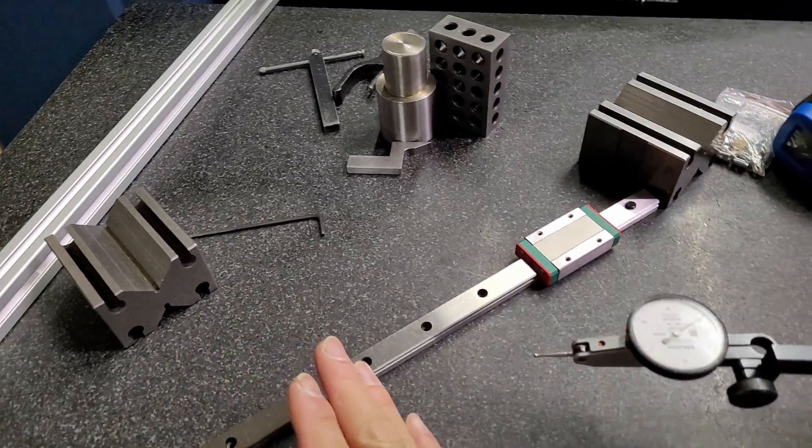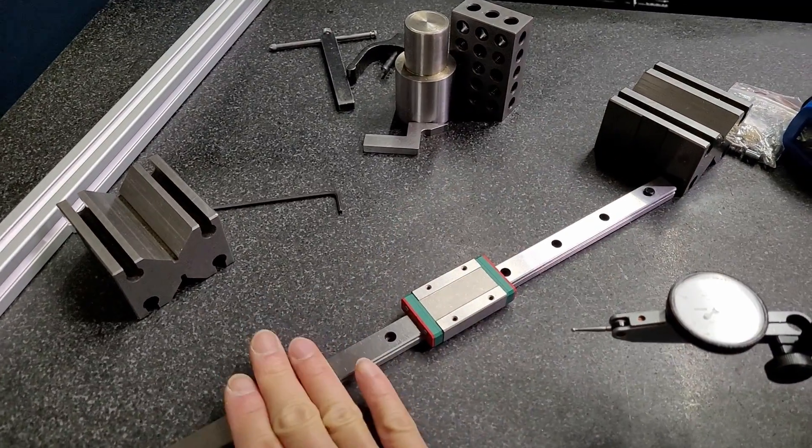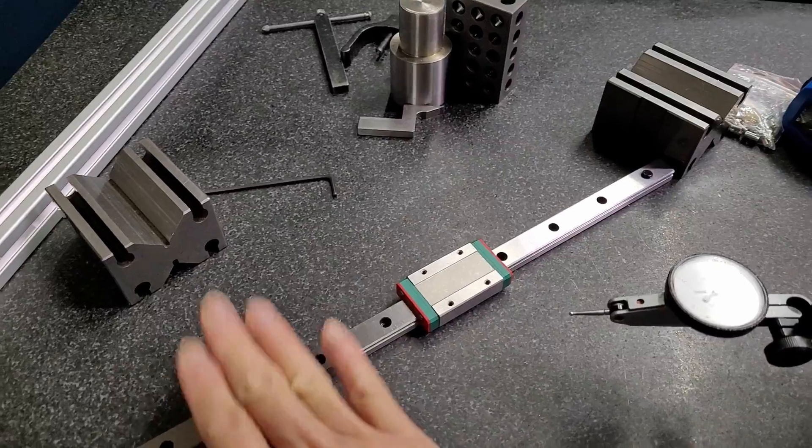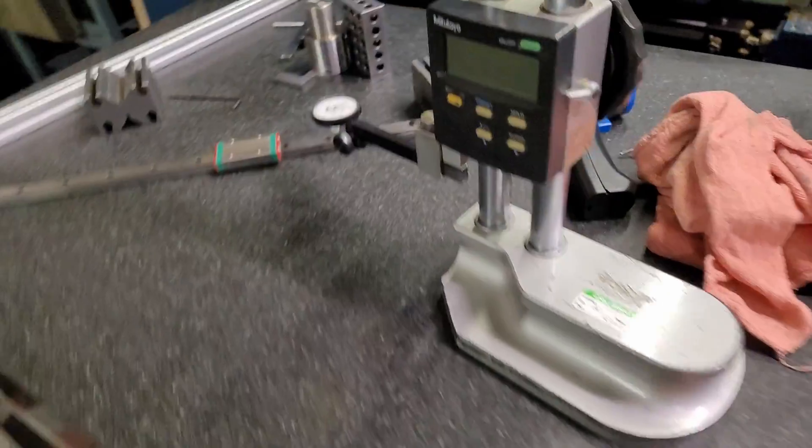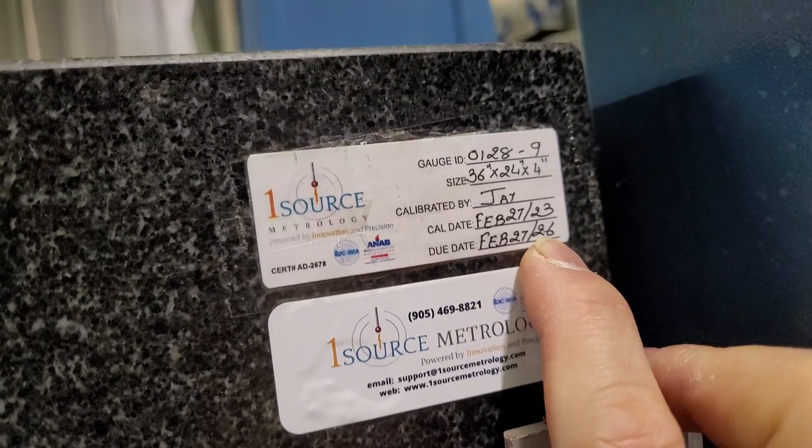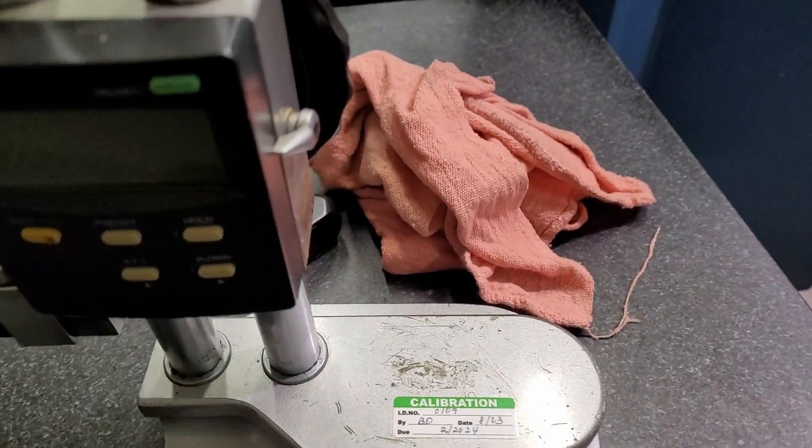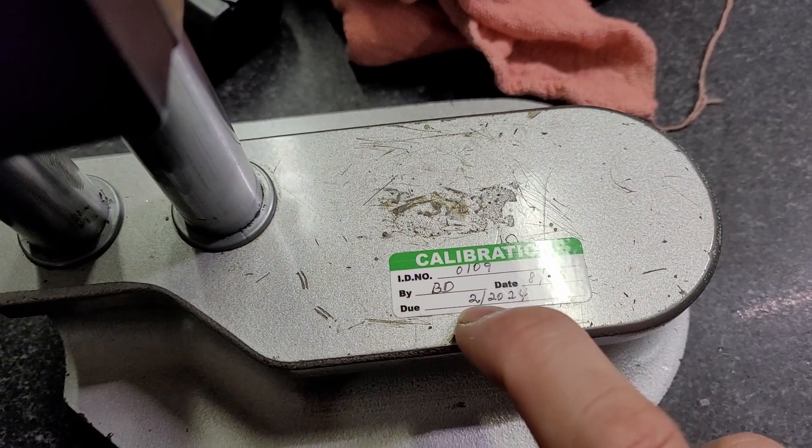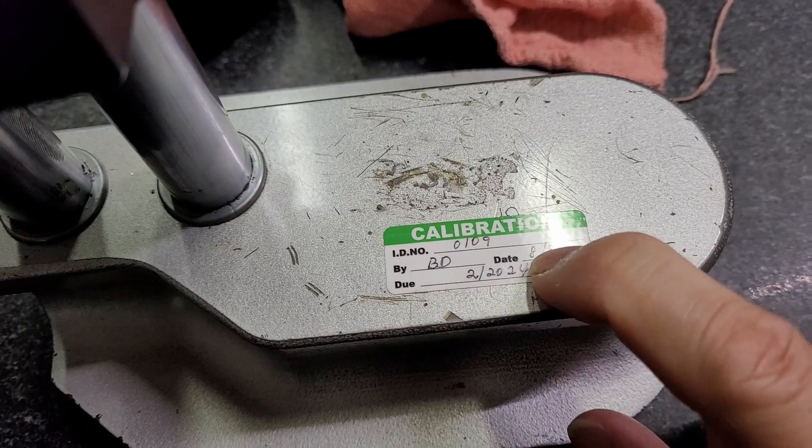I want to check how flat the surfaces are mechanically. What I have here is my surface plate which is calibrated every three years. As you can see the sticker over here, the due date is February 27, 2026. That's the calibration sticker for the surface plate, and the equipment is also calibrated every six months. As you can see, the due date is February 2024, and the last one was in August 2023.